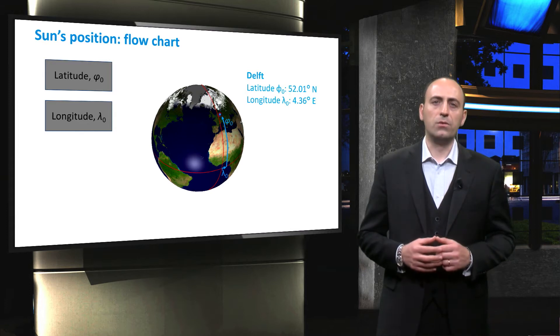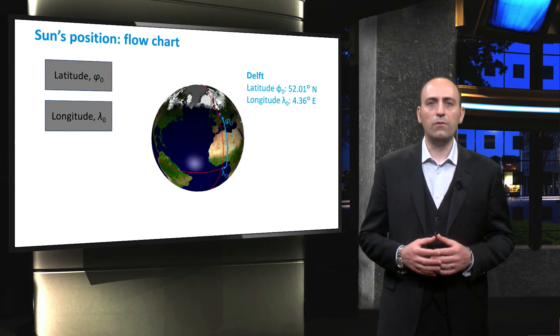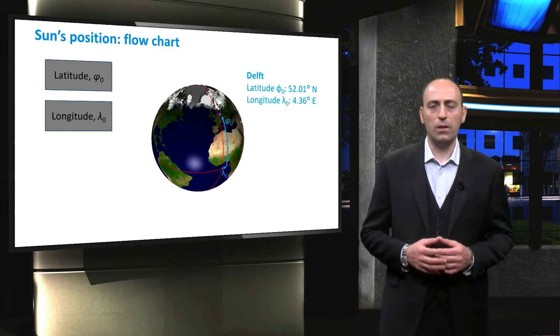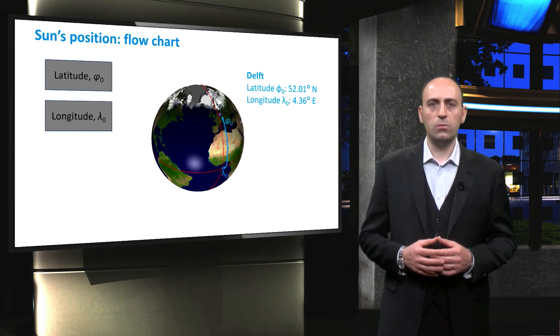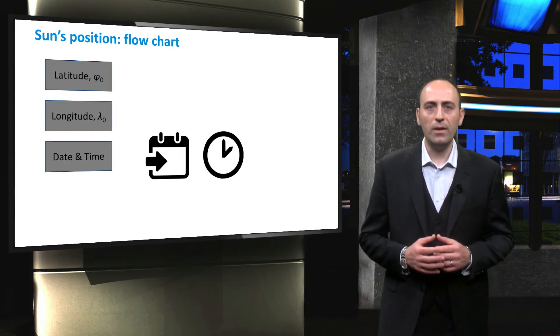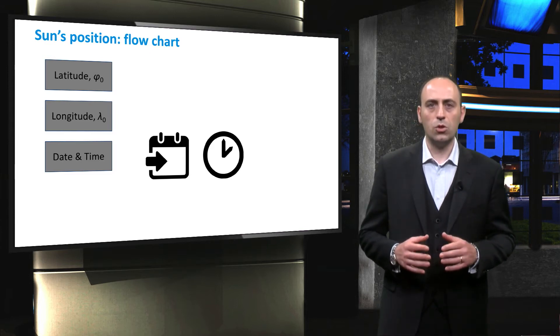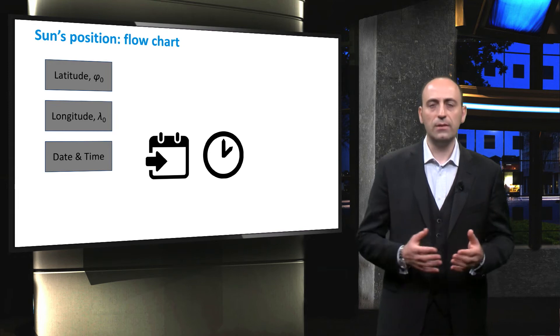First step is to locate the observer position on the Earth's crust, and thus the PV system, by means of the geographical latitude phi and the longitude lambda. In this case we have Delft, that is located 52 degrees north and 4 degrees east. We also need the moment of the day in which we want to calculate the position of the Sun. So we have to provide the date and the time.